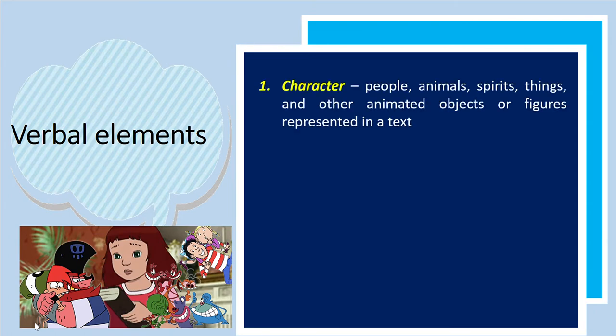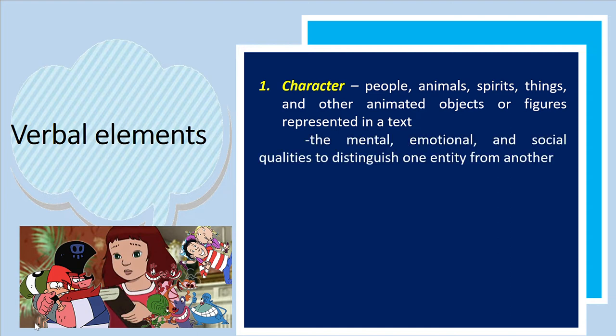The first verbal element is character. Character refers to people, animals, spirits, things, and other animated objects or figures represented in a text. It could also mean the mental, emotional, and social qualities that distinguish one entity from another. Writers use characters to perform the actions and speak dialogue, moving the story along a plot line. A story can have only one character, the protagonist, and still be complete. This character's conflict may be an inner one, within him or herself, or a conflict with something natural such as calamity or climbing a mountain.